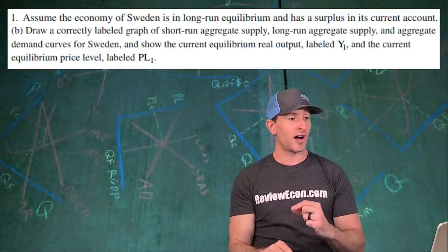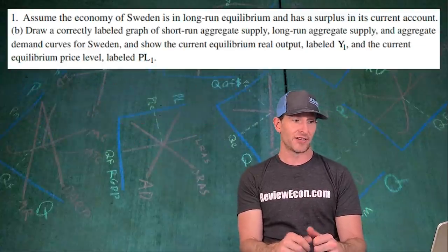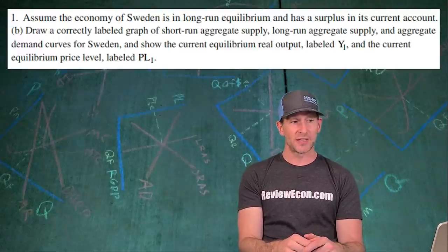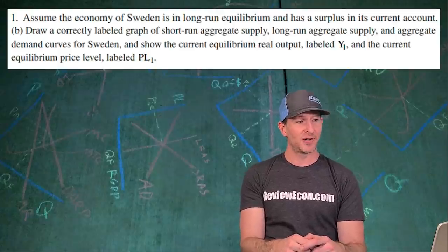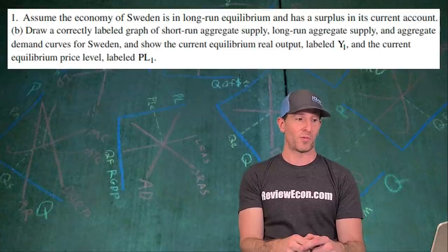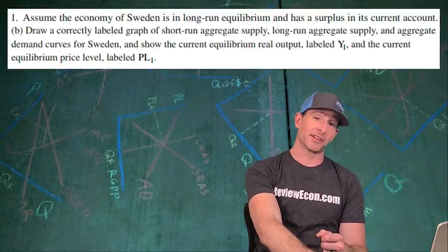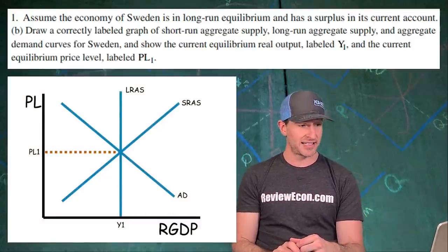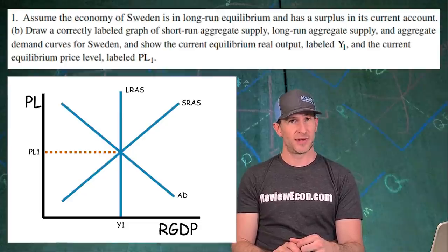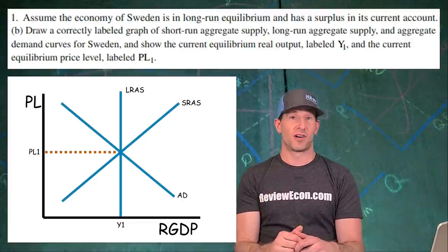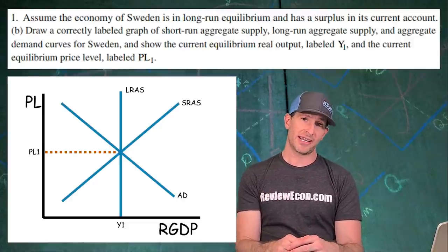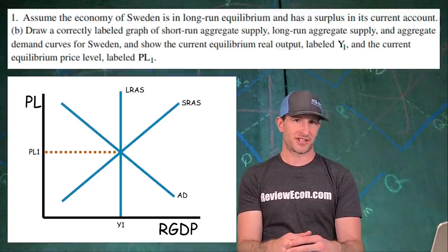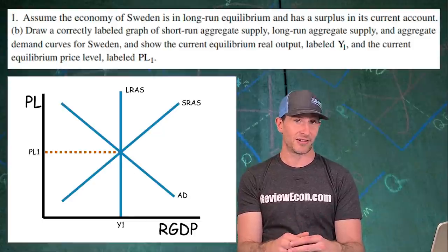On to part B. We're going to draw a correctly labeled graph of the short-run aggregate supply curve, long-run aggregate supply curve, and aggregate demand curves for Sweden, showing the current equilibrium real output labeled Y1 and the current equilibrium price level labeled PL1. Since this economy is currently in long-run equilibrium, all three curves intersect, and Y1 will be equal to the full employment output, right underneath that vertical long-run aggregate supply curve. Mark the current equilibrium price level at the intersection of aggregate demand and short-run aggregate supply.